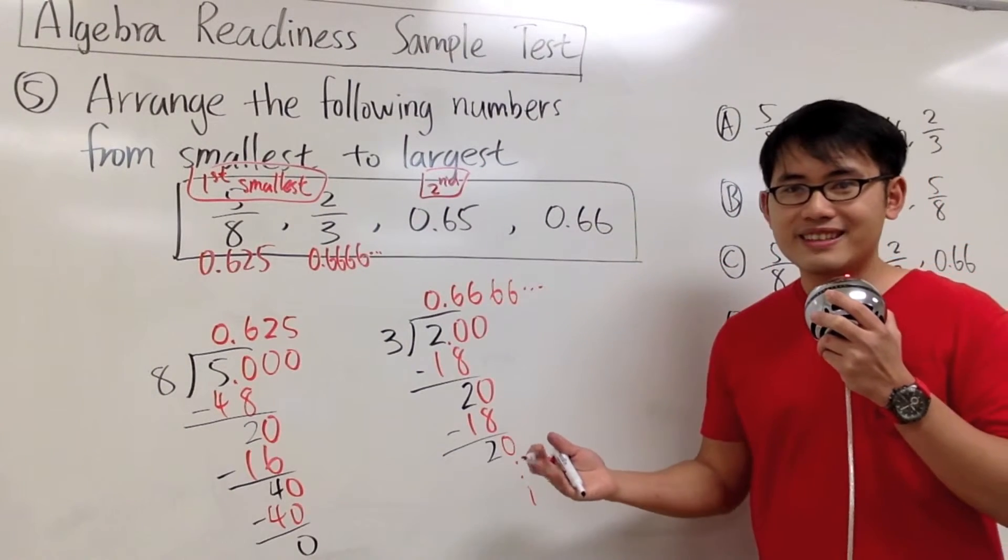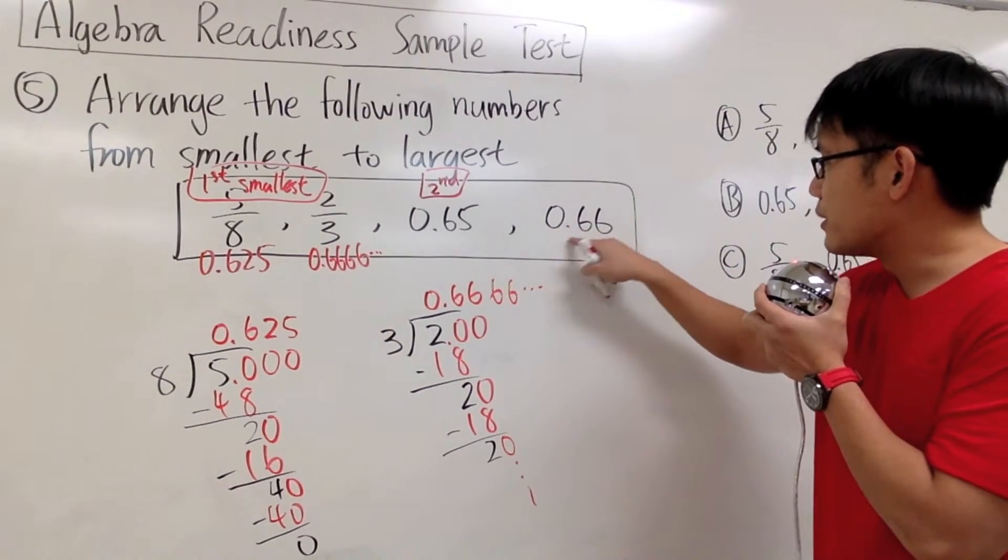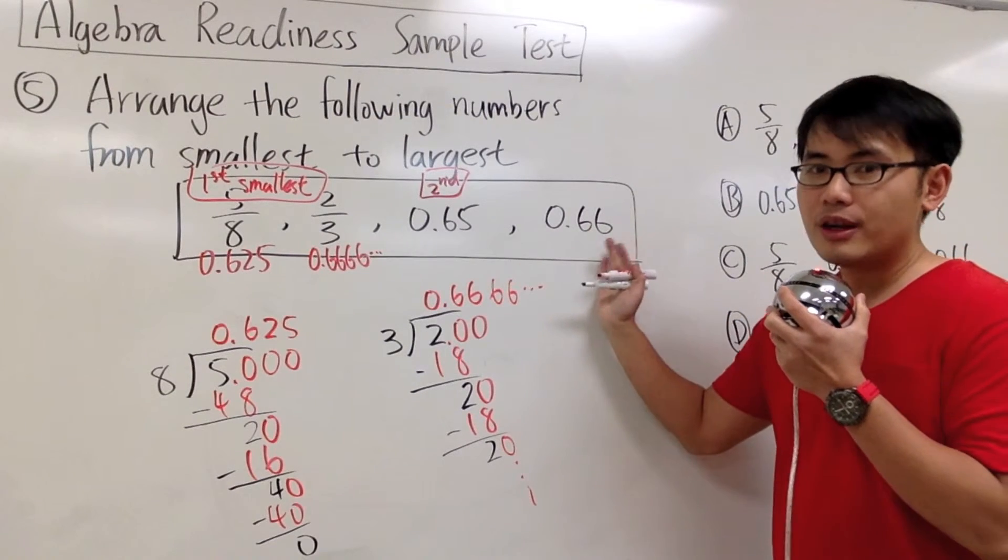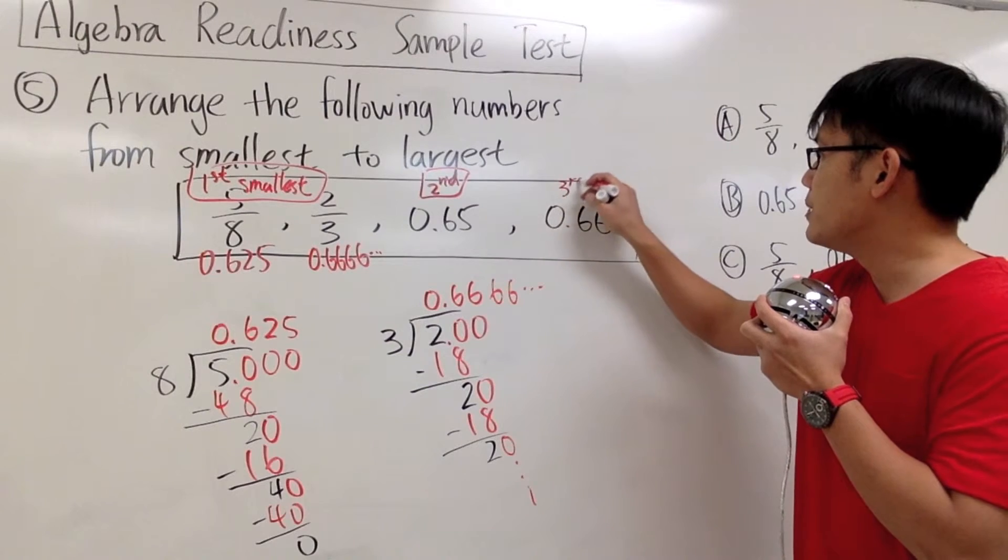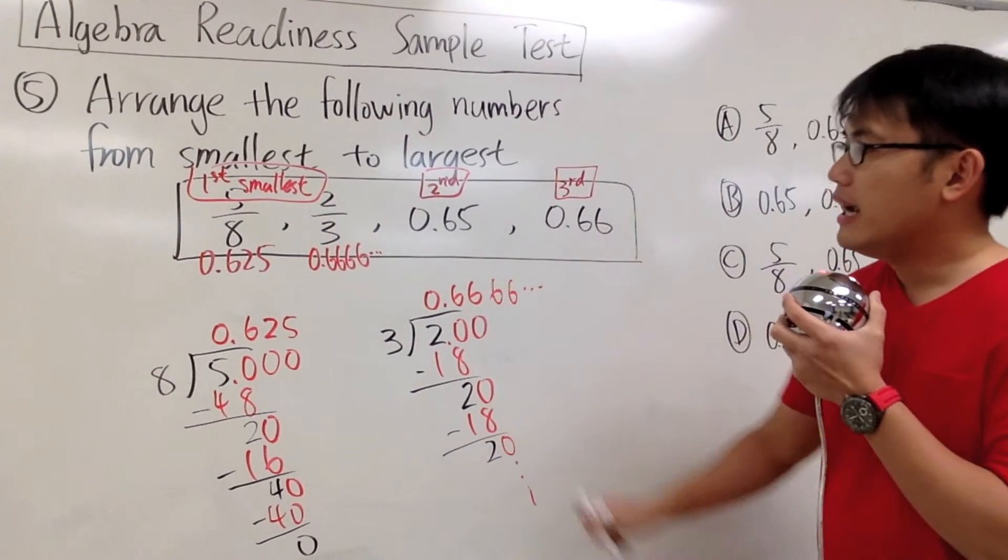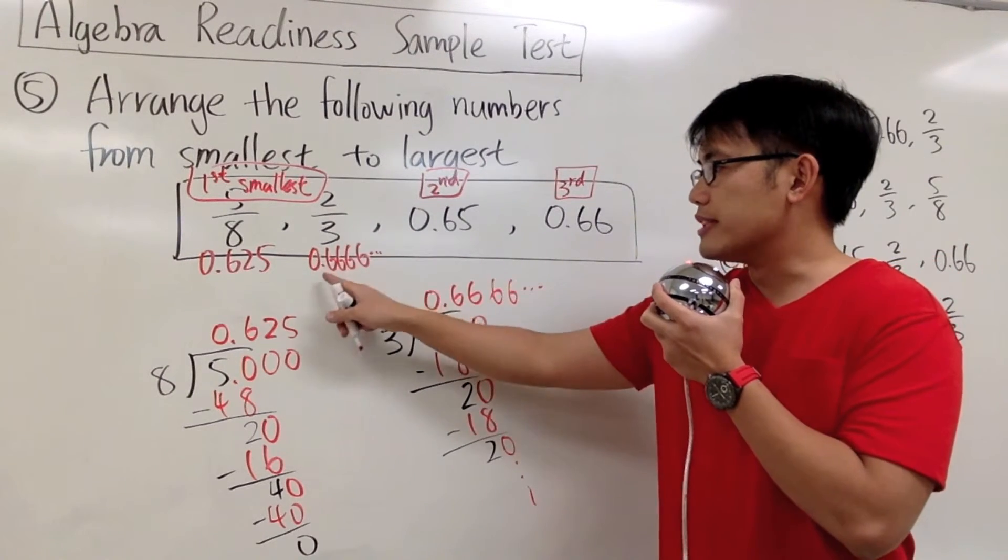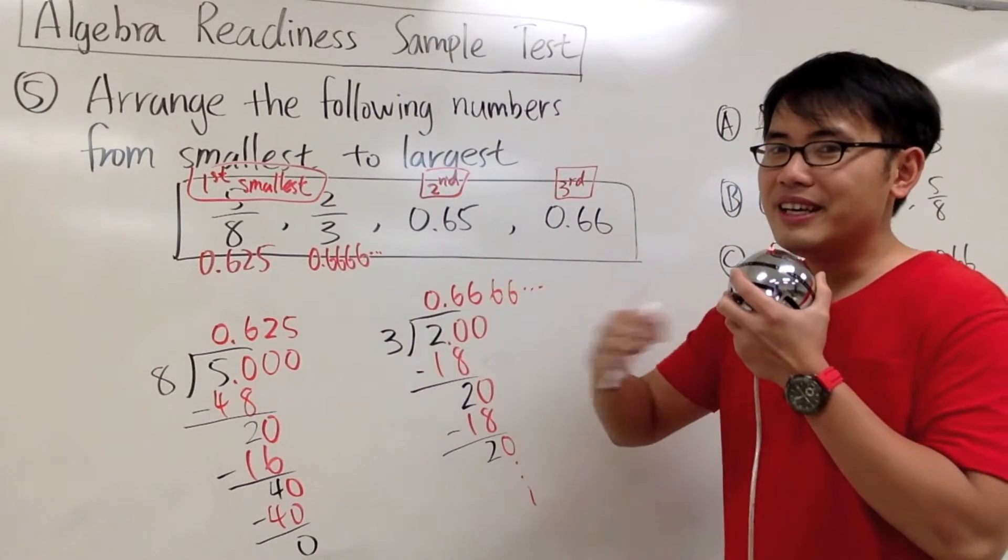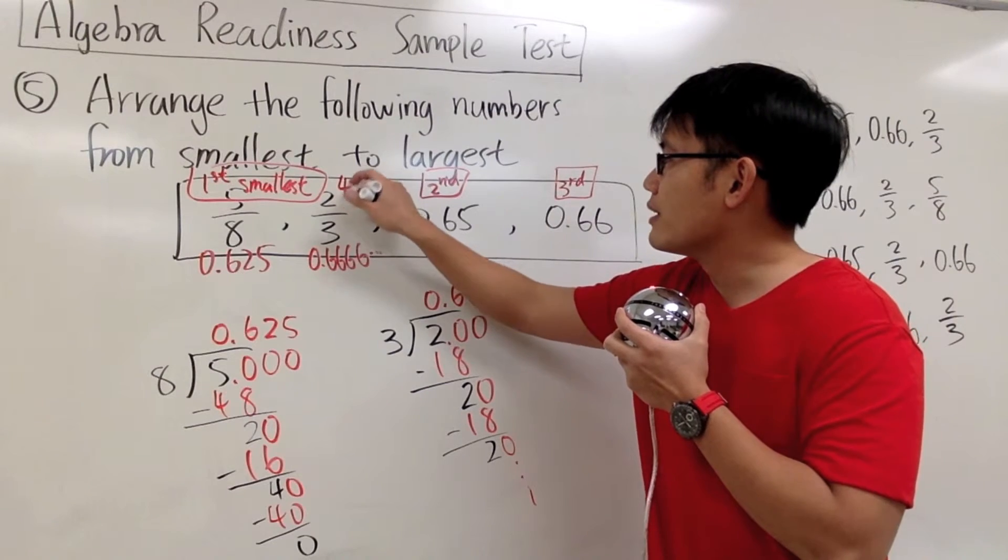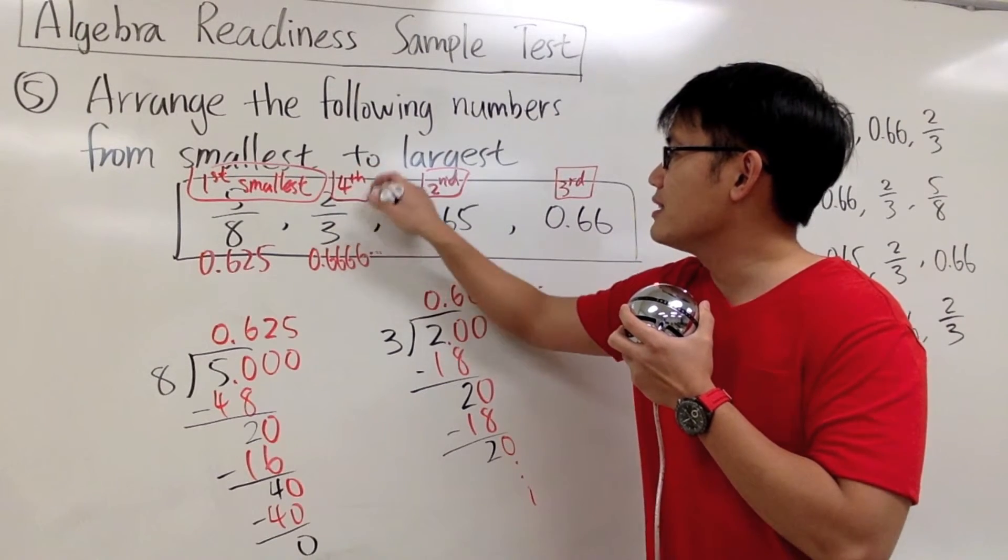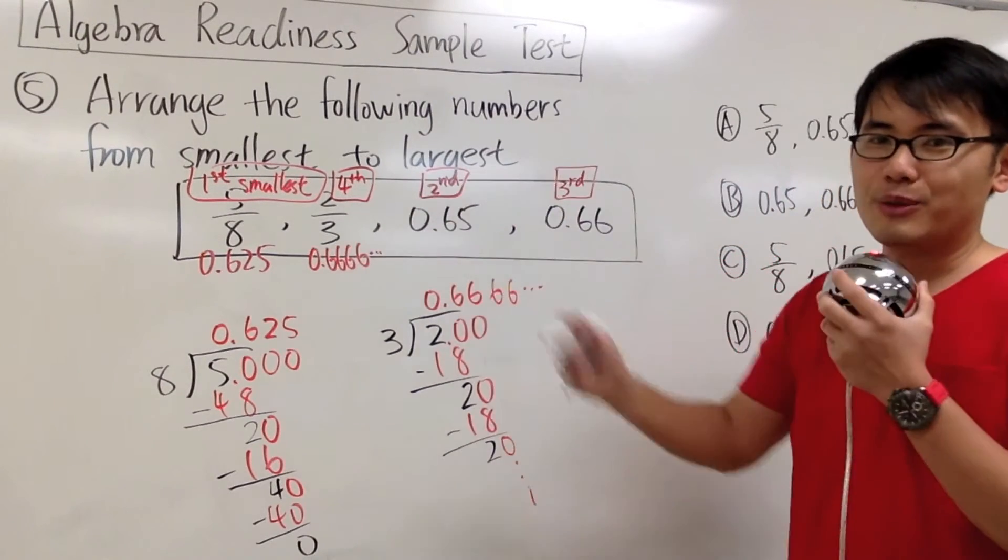How about the third one? In fact, 0.66 stops right here. This right here is who will be the third smallest. So this will be the third place. And then the 2 over 3, which is the same as 0.66666. Infinitely many 6 afterwards. This will be the fourth one. It's also the biggest. But then this will be the fourth smallest.